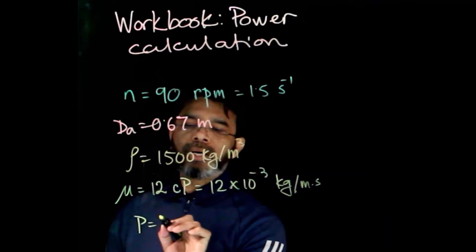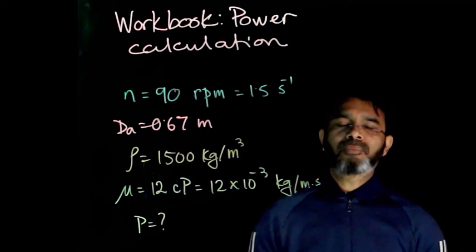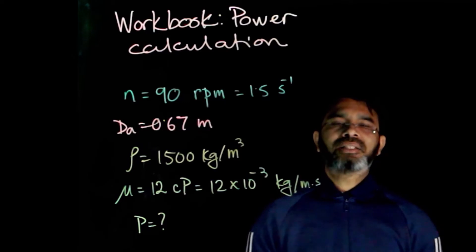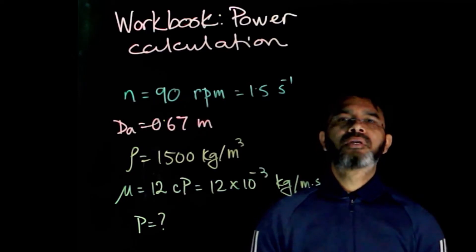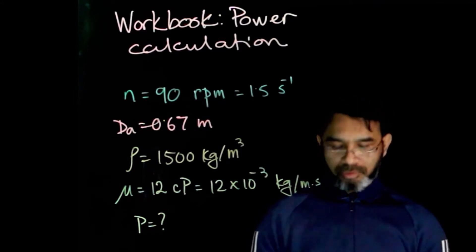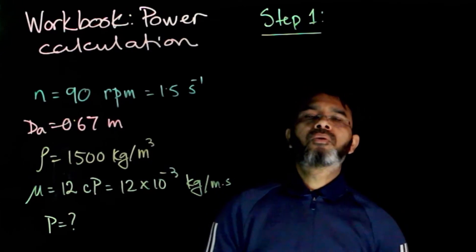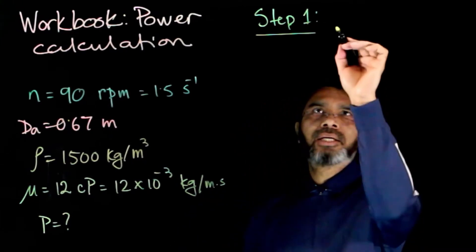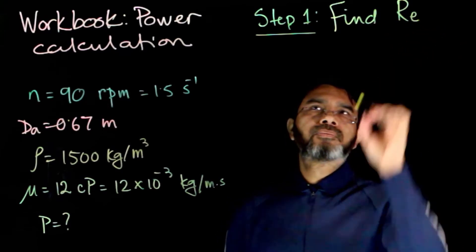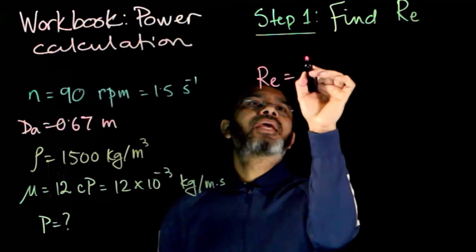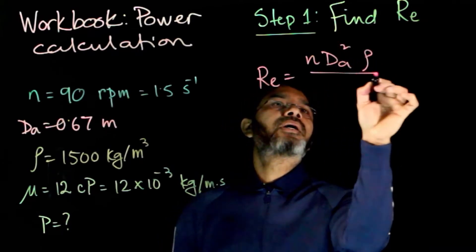We are going to calculate the power requirement. The power requirement can be calculated using either the power number, KT values, or KL values—the constant terms for laminar flow and turbulent flow. The first step will be to determine the type of flow, meaning find the Reynolds number. The Reynolds number is given as Re = nDA²ρ/μ.